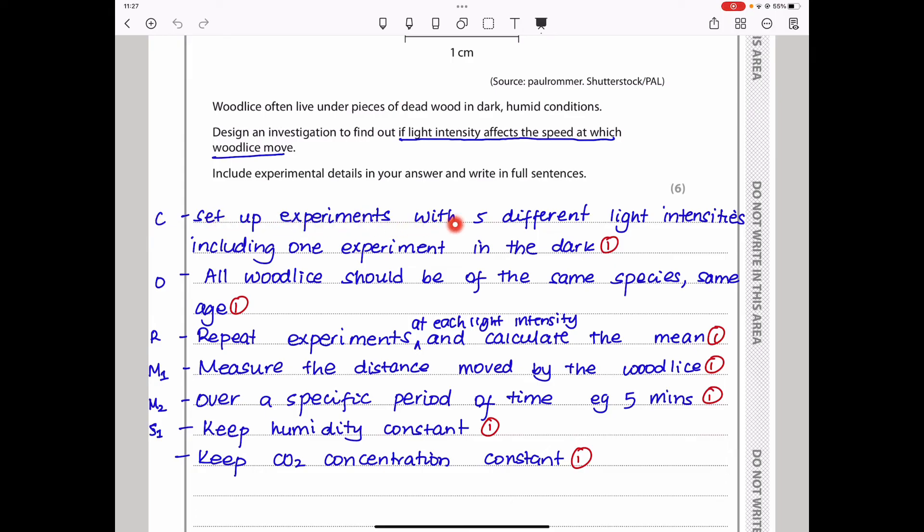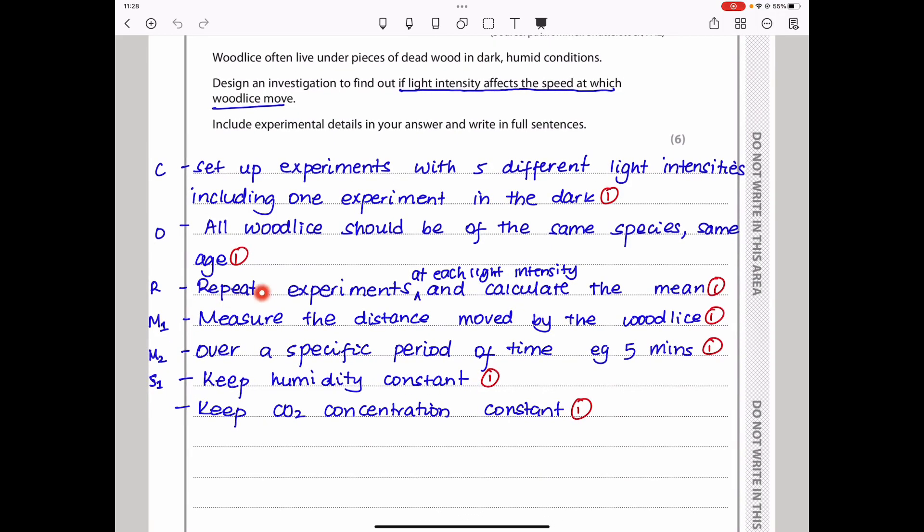For C, we have to set up experiments with five different light intensities. The reason for this is you have to do five or more experiments in order to show that you have varied enough. We have to include one experiment in the dark. This could be kind of control. Or, for organisms, all woodlice we use in the experiment should be of the same species and the same age. This is to ensure that they will respond to the same conditions the same way. R is for repeat the experiment at each light intensity and calculate the mean. This is to ensure that your results are dependable. M1 is for measuring the dependent variable. We have to measure the distance moved by the woodlice within a specific period of time. That is for M2. Over a specific period of time, this time could be five minutes.